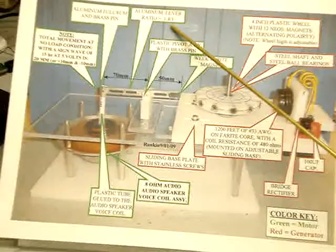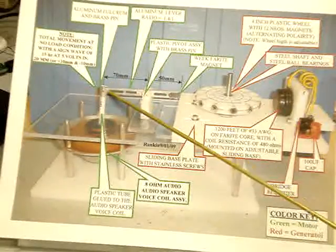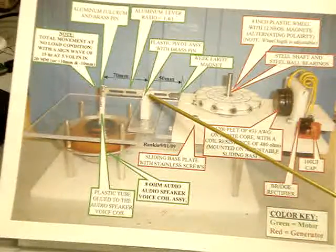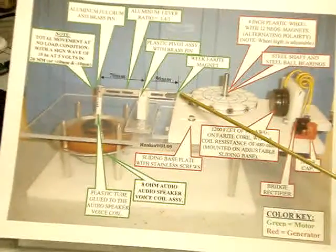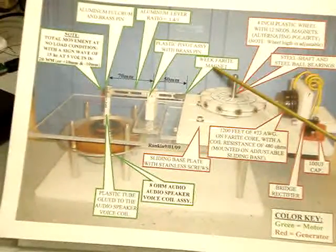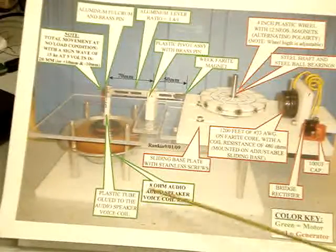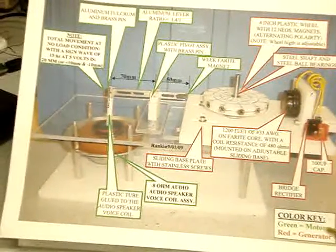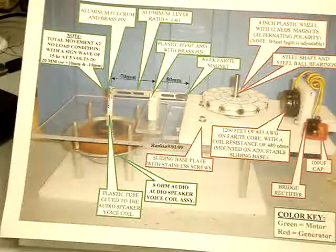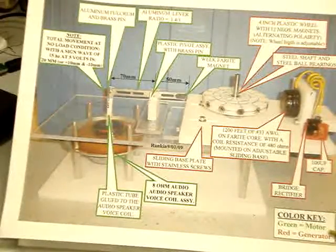The lever has a ratio of 1.4 to 1, 70mm to the pin and then 50mm to the end of my magnet, which I have a weak ferrite magnet on the end. And everything in green then is my, more or less, my motor portion. Everything in red is the generator portion.